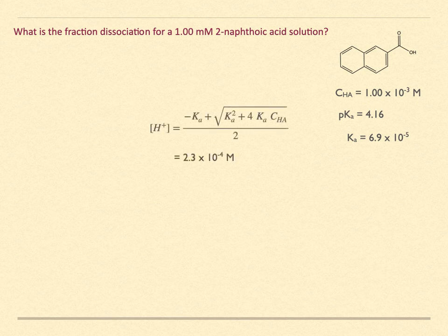Use the quadratic expression to solve for the hydronium ion concentration. We find it is 2.3 times 10 to the minus 4 molar.